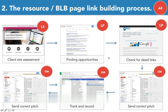The biggest difference here is that we're targeting two different link types with one search operator. The link prospector, while looking for resource pages, is also checking each of those resource pages for broken links — very simple. I'm going to show exactly how to do it in the next video. So this is the resource page and broken link building process.